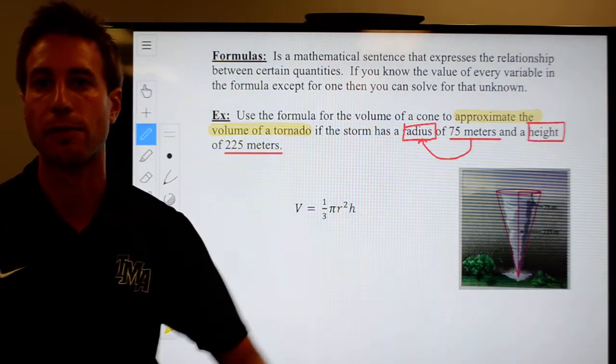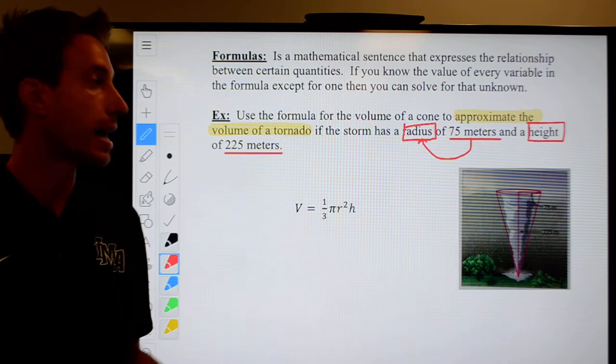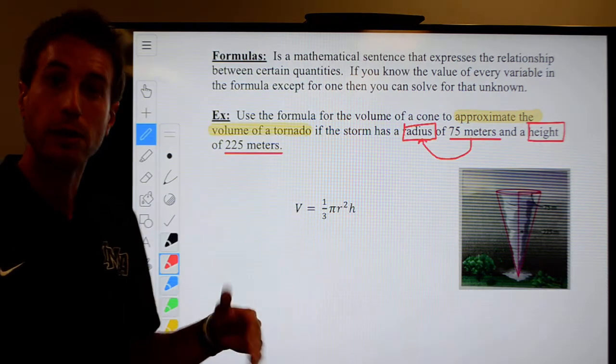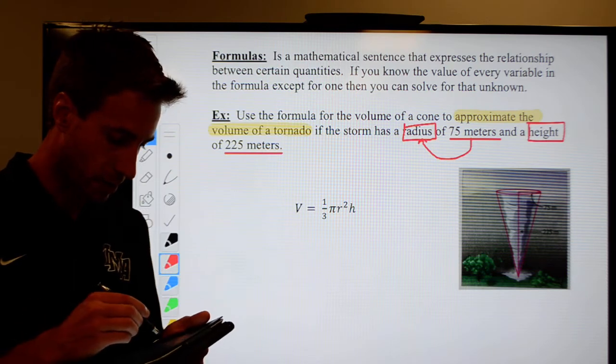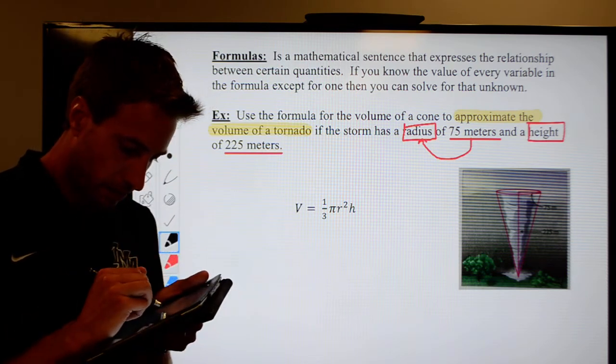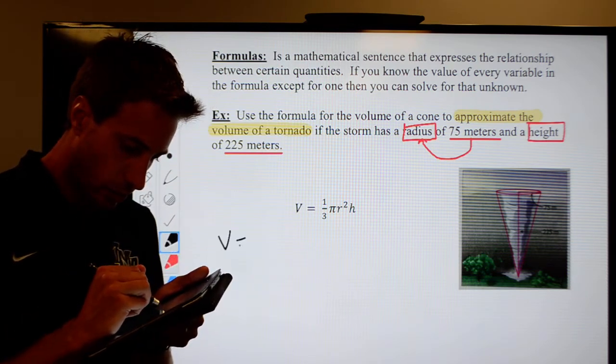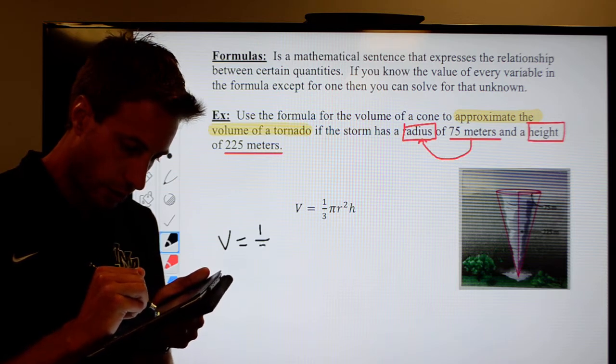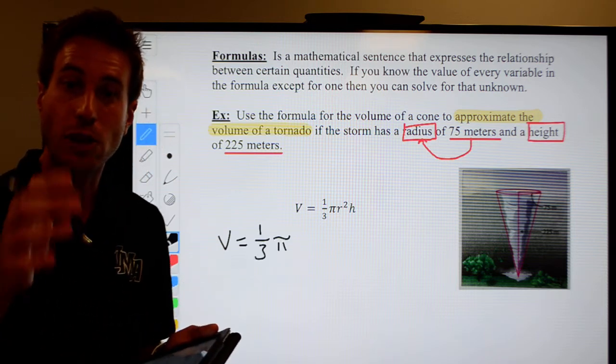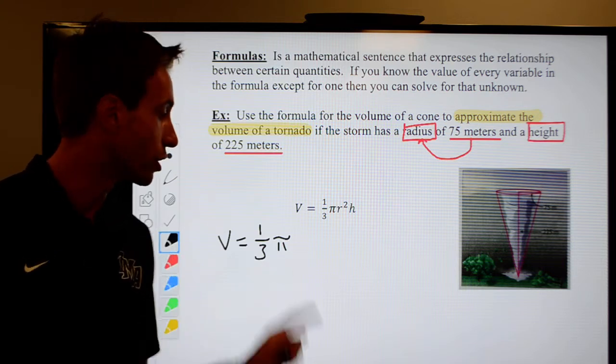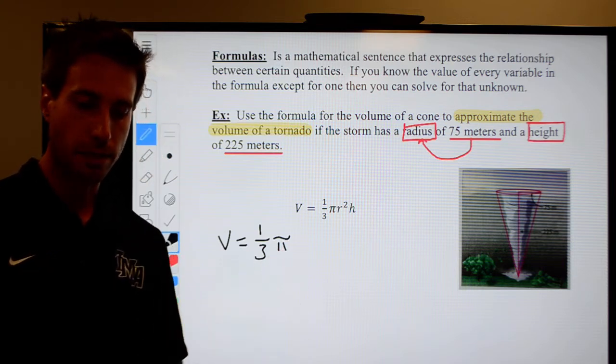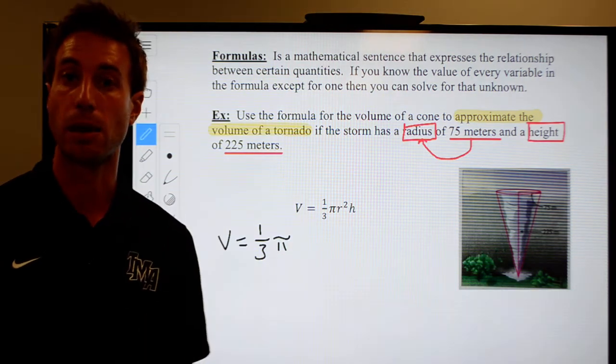Then we'll use the order of operations to evaluate the formula. Here we go. The volume is equal to one-third pi. Remember, pi is not a variable. Pi is a number. Pi is a number. Remember, we just use the Greek letter to represent this number pi. You should be very familiar with pi at this point.